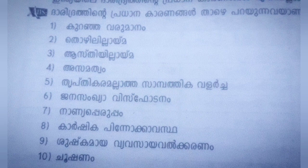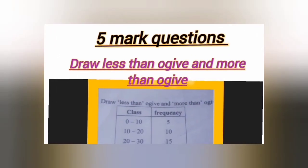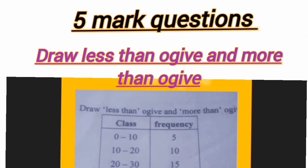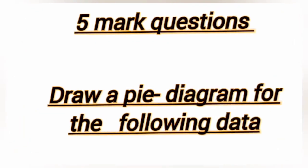Take a look at the next page. Don't forget to explain a little about what the problem is. I will ask you to draw less than an ogive and more than an ogive. You will see the links on the channel and in the description. Next question is to draw a pie diagram for the following data.